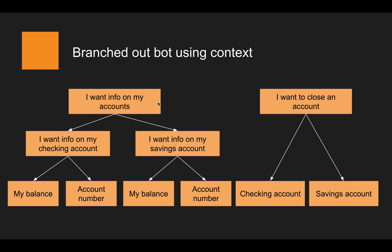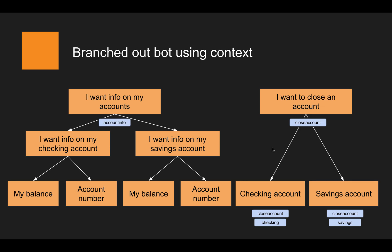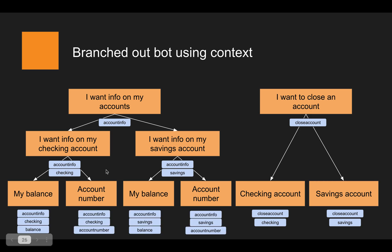To realize this step-by-step nature of the conversation, we add a context at every level. For the right branch, as soon as I tell the bot I want to close the account, I add the close account context. Then when I specify checking or savings, I add that context too. For the left branch, I tell the bot I want information and we add the account info context, then specify the account type adding checking or savings, and finally in the third level we specify balance or account number and add a third context.